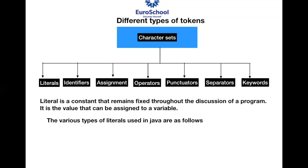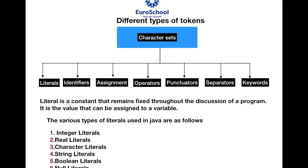There are various types of literals in Java: integer literal, real literal, character, string, boolean, and null. Integer is a whole number, real is a number in a different format with decimals, character is a single letter, string is multiple letters, boolean is related to true and false as we saw with logical operators, and null means empty.